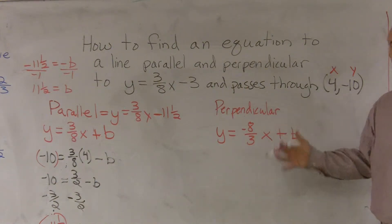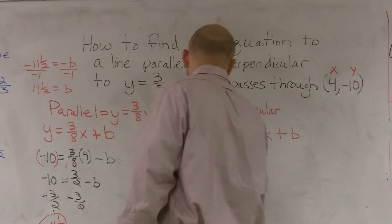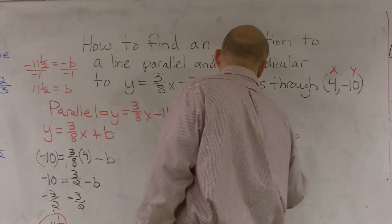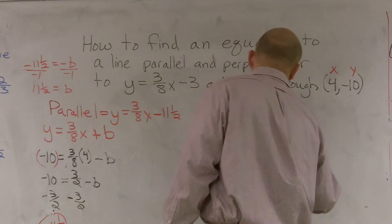All right? Now we're going to follow the exact same process. You take your two points and you plug them in and solve for b. So I'm plugging negative 10 in for y equals negative 8/3 times 4 plus b.